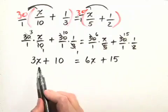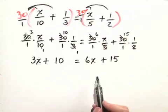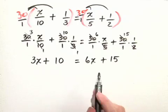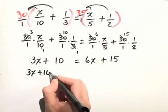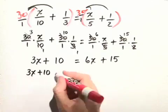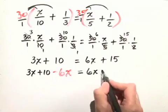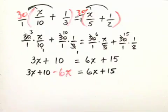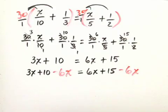Let's choose to move the variables to the left-hand side, but it really makes no difference. You could also have moved them to the right-hand side. So let's subtract 6x from both sides. So 3x plus 10 minus 6x equals 6x plus 15, minus 6x.